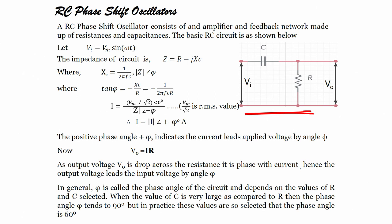If the input signal is V_m sin(ωt), the impedance of the circuit would be R minus j/ωC, where X_C equals 1/(2πfC). So tan(φ) equals minus X_C/R, or minus 1/(2πfC·R). The positive phase angle indicates that the current leads the applied voltage by angle φ.